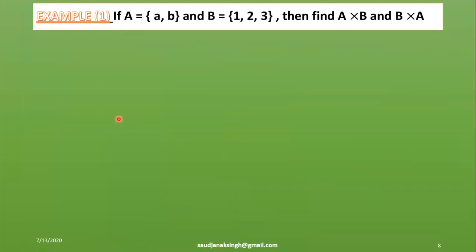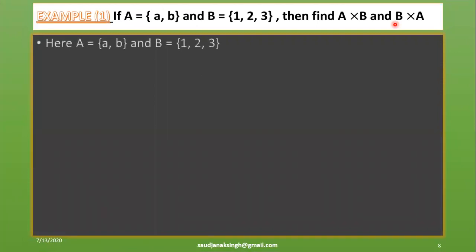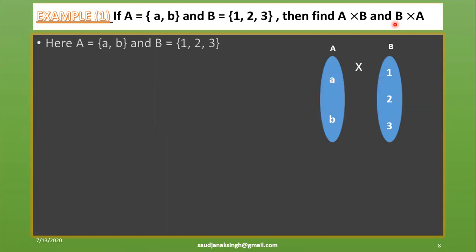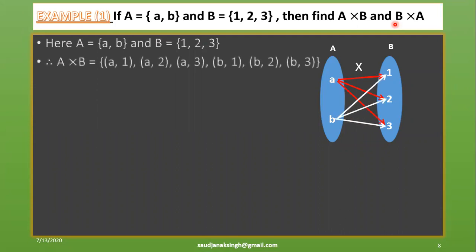Example 1: If set A equals {a, b} and set B equals {1, 2, 3}, find A cross B and B cross A. Using the arrow diagram, each element of A maps to all elements of B. So A cross B equals {(a,1), (a,2), (a,3), (b,1), (b,2), (b,3)}.